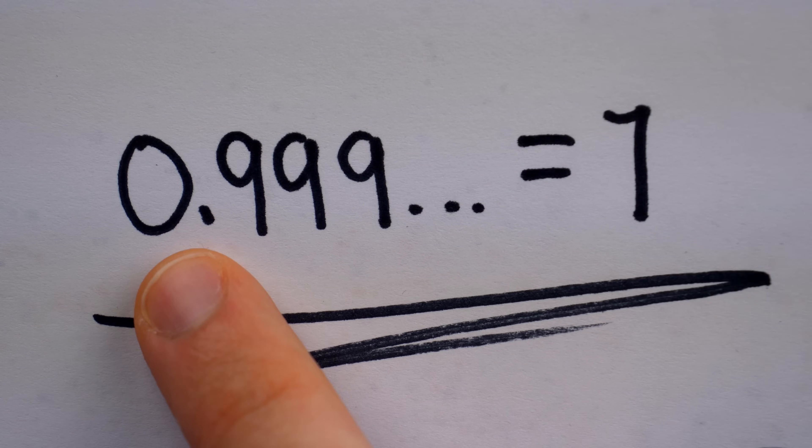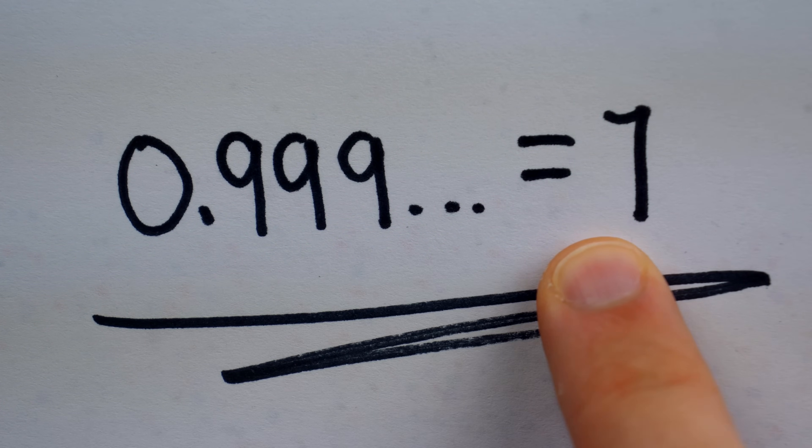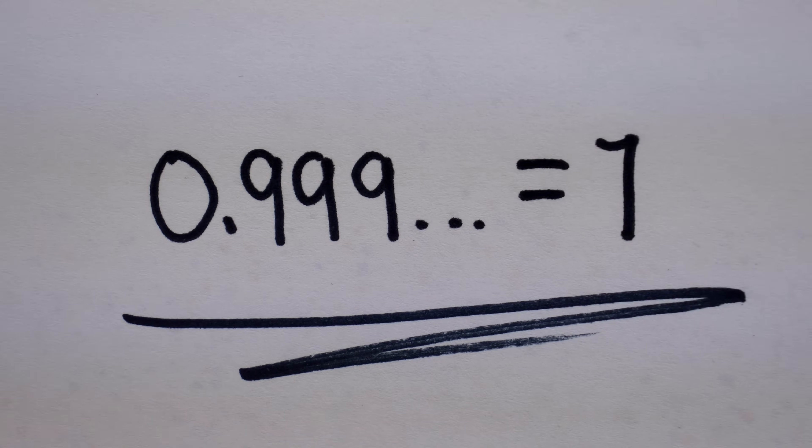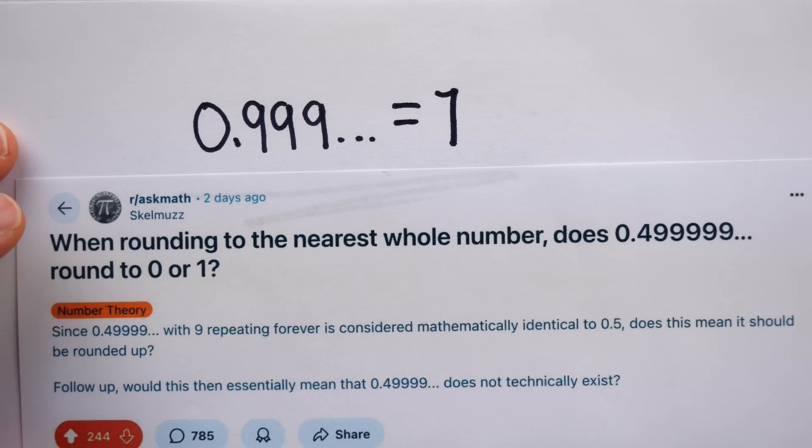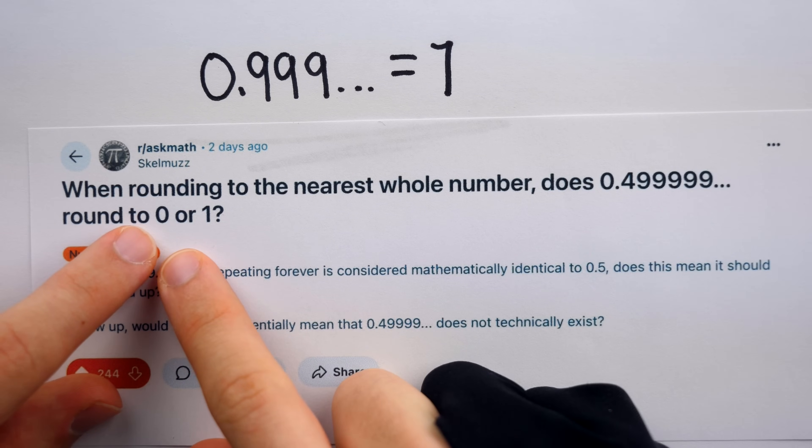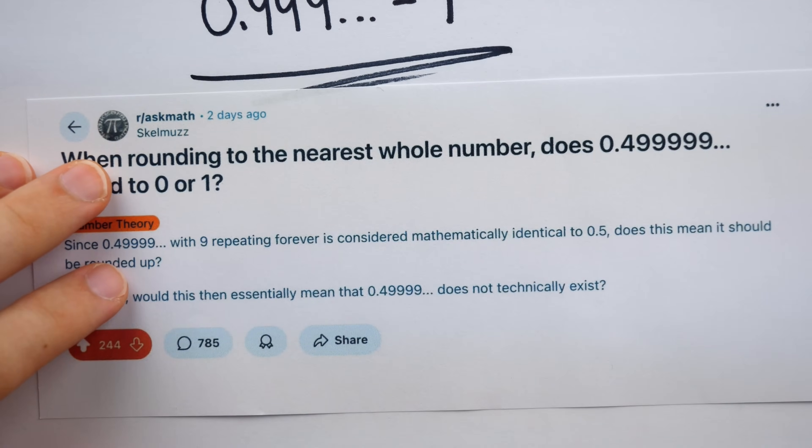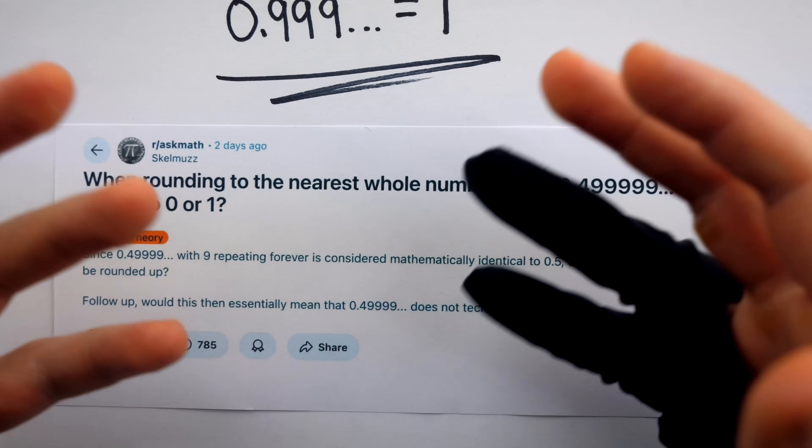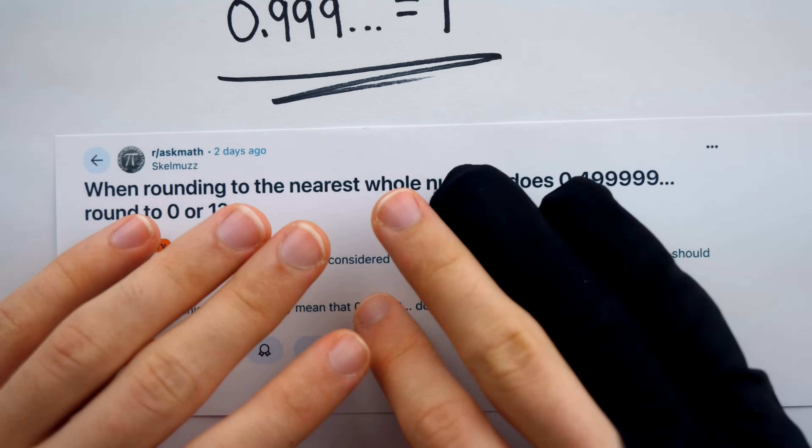If you haven't heard that 0.999 repeating is equal to one, well, it is, depending on who you ask, but yeah, it's one. But what about rounding 0.49999 repeating? Does it round to zero or to one? Of course, it depends on how you round. There are different types of rounding, and which rounding should be used depends on the context.